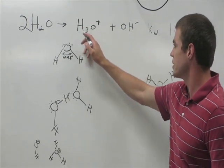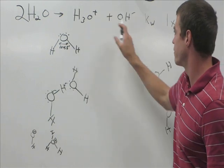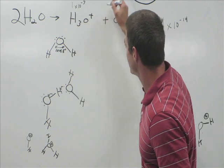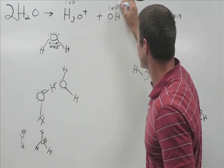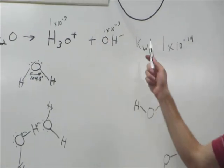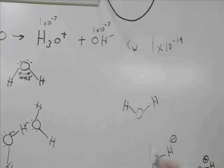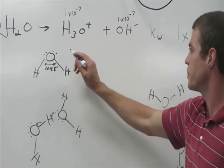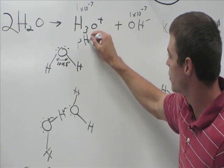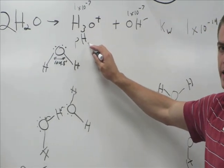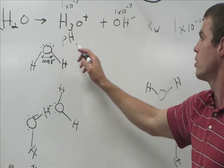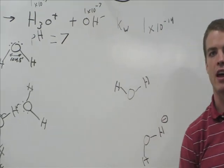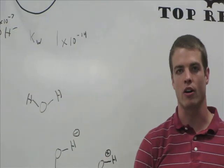These two ions — hydronium and hydroxide — are always in equilibrium. In pure water, each is at 1×10⁻⁷ molar, and multiplied together they give us Kw = 1×10⁻¹⁴. Taking the pH, which is the negative log of the hydronium concentration: the negative log of 1×10⁻⁷ equals 7. That is why neutral water has a pH of 7.